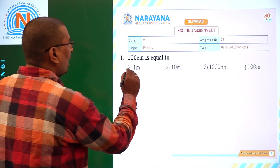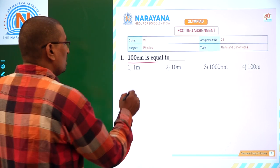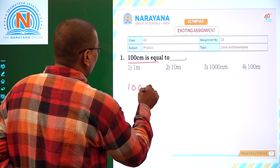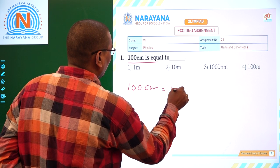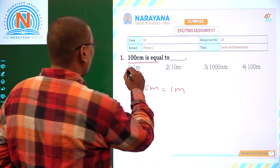First one: 100 cm is equal to... So 100 cm is equal to 1 meter. Here, option 1 is our answer.